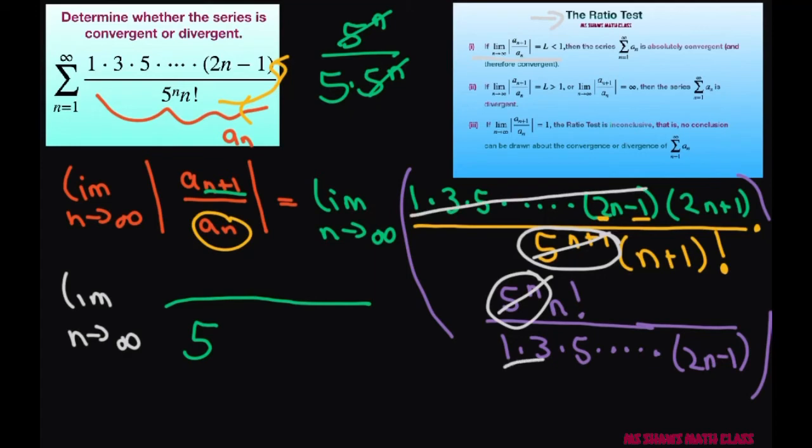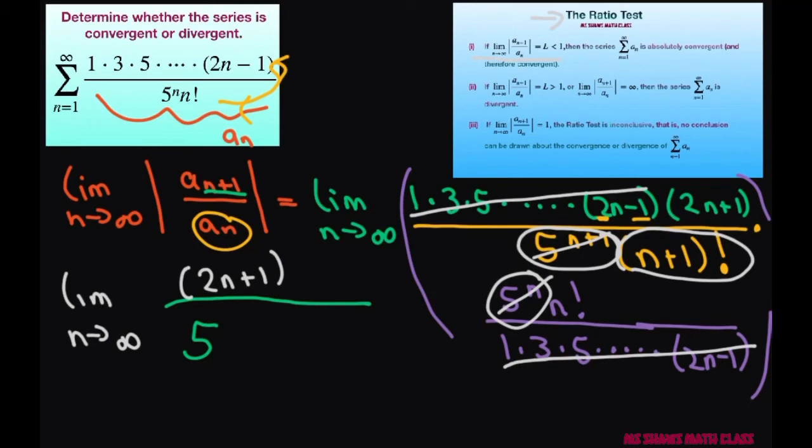Now this all cancels out, so you're left with in the numerator 2n+1. And then for this piece here, we have n factorial. Now n factorial in your numerator can be written as n times (n minus 1) factorial.